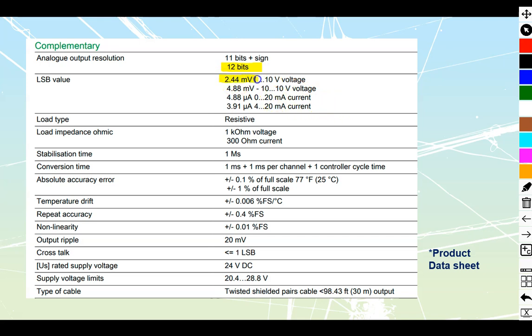Looking at our values of voltage that we can apply out, we also see that our least significant bits, or the smallest amount of change we can affect, is going to be 2.44 millivolts on the 0 to 10 volt scale, or 4.88 millivolts on the minus 10 to plus 10 scale.